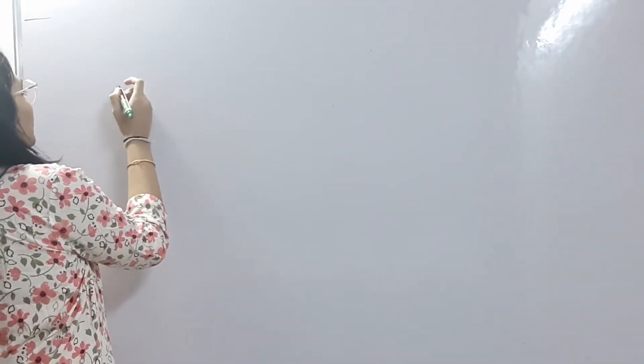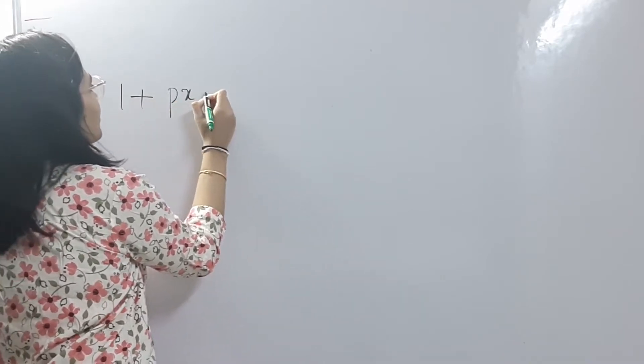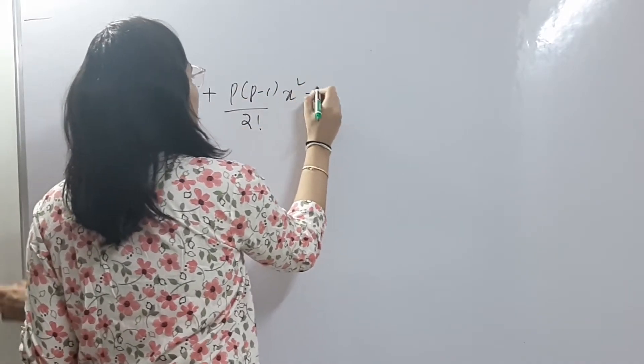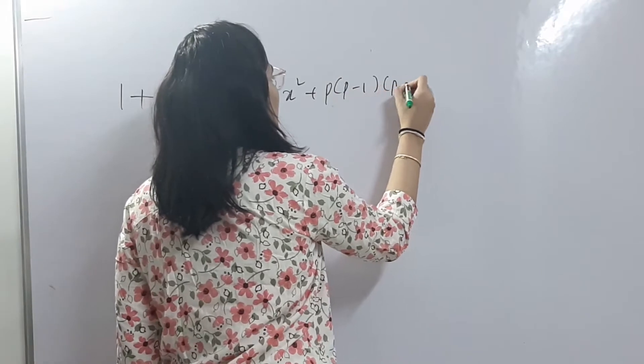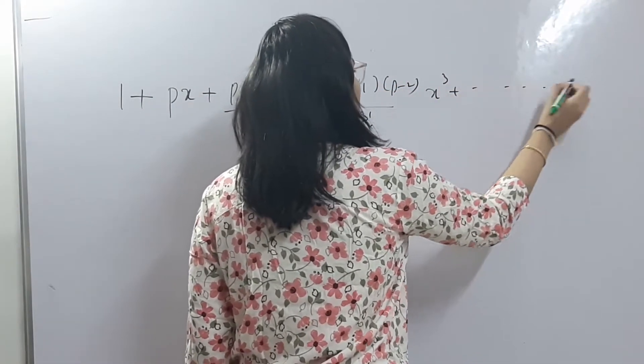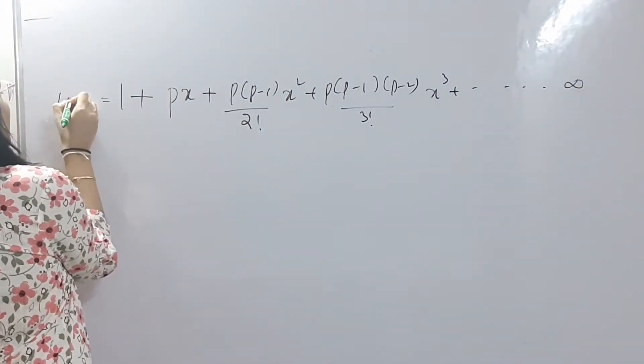Without wasting any more time, let's jump right into the video. Let's start by understanding what a binomial series is. Binomial series is the most important and frequently used series in many applications involving algebra. It looks like this: 1 plus px plus p(p−1)/2! times x squared plus p(p−1)(p−2)/3! times x cubed, and so on up to infinity. This is the expansion of (1+x) to the power of p.